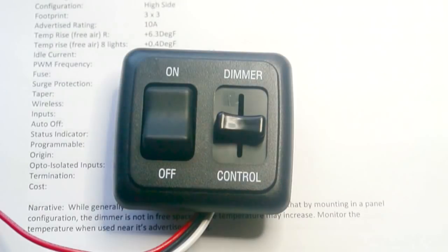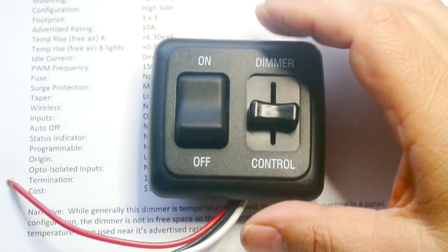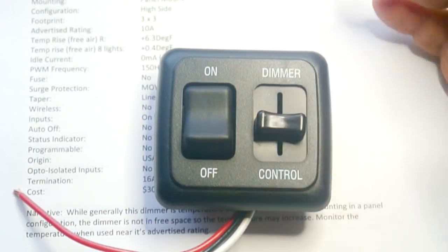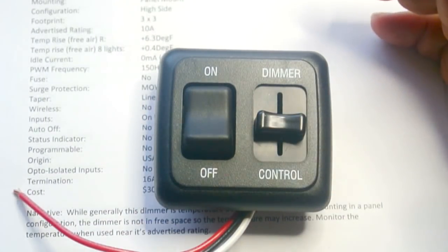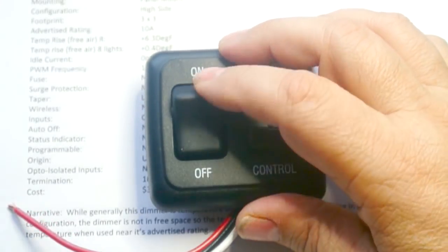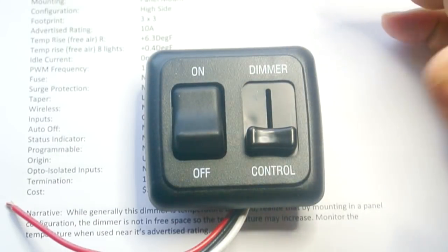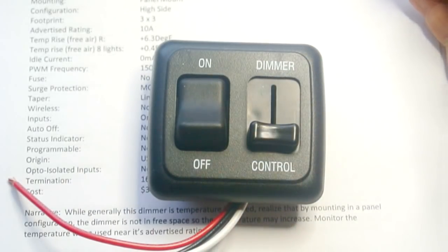Next, we have this American Technology Corporation. It is a high-side configuration. The PWM frequency of this is 150 Hz. It does have an MOV built-in, which is kind of nice, which is a surge protector. The dimmer control is a slide switch, and it also has an on-off switch. So when you turn this off, you have no parasitic loads in the RV. And this is about $30 as well.